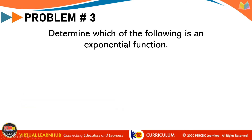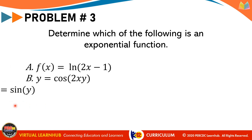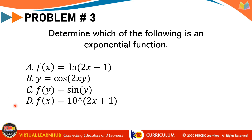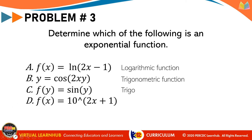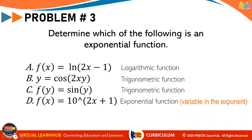Problem number 3: which of the following is an exponential function? A: f(x) equals ln of 2x minus 1. B: y equals cosine 2xy. C: f(y) equals sine y. D: f(x) equals 10 raised to 2x plus 1. Obviously, A is a logarithmic function. B is a trigonometric function. C is also a trigonometric function. And D is the exponential function because of the variable in the exponent.